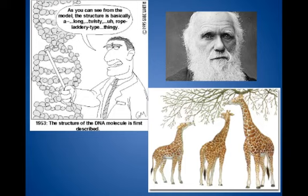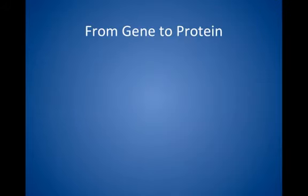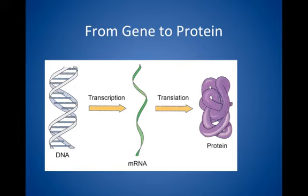Good afternoon, everyone. We just finished a unit talking specifically about how information is stored in DNA, through the process where genetic information is changed into another form called RNA, whereby it is then translated by ribosomes into amino acid information, which builds polypeptides to form functional proteins.